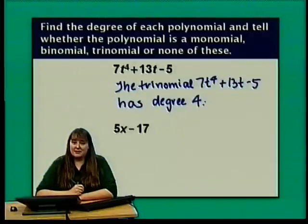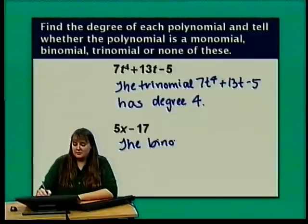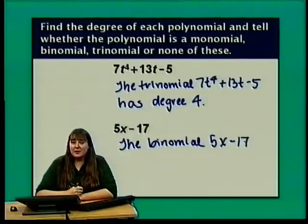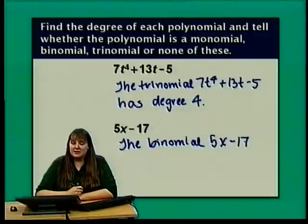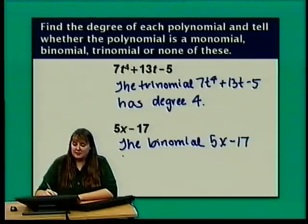5x minus 17 has 2 terms, so this is a binomial. The highest degree term is 5x — the constant negative 17 has degree 0 — so the degree of 5x is 1. The binomial 5x minus 17 has degree 1.